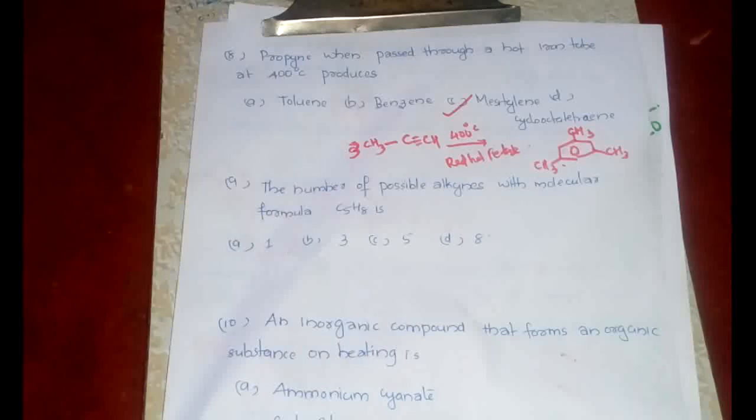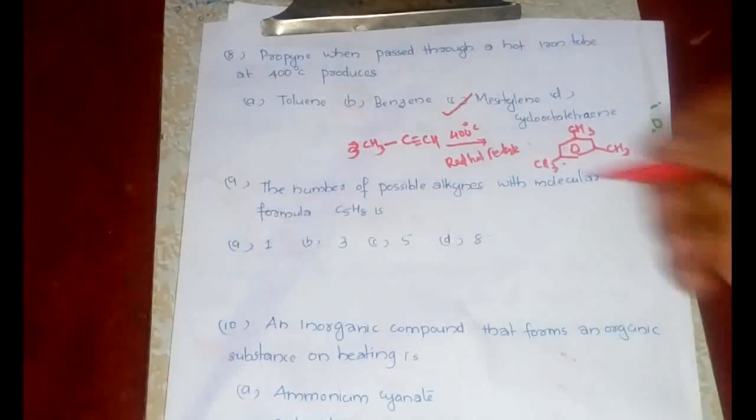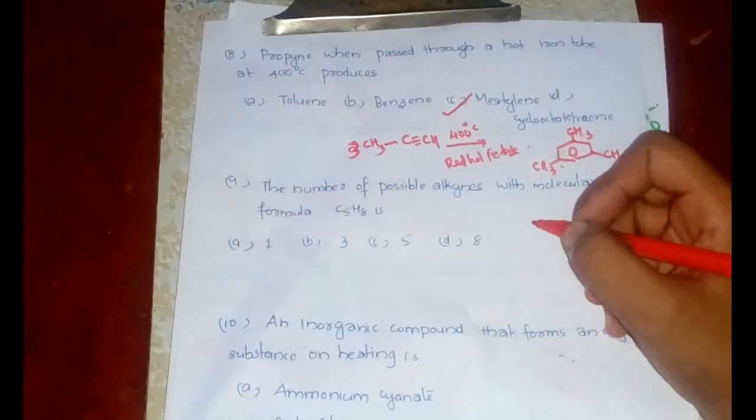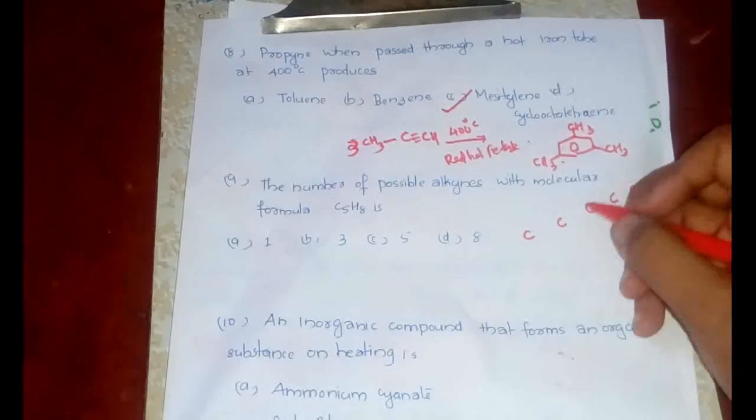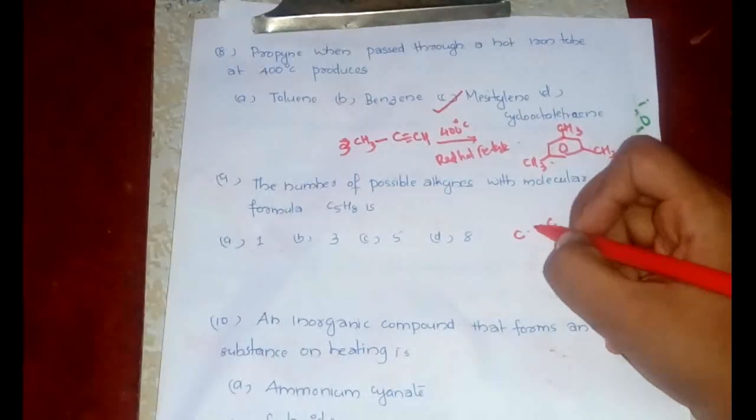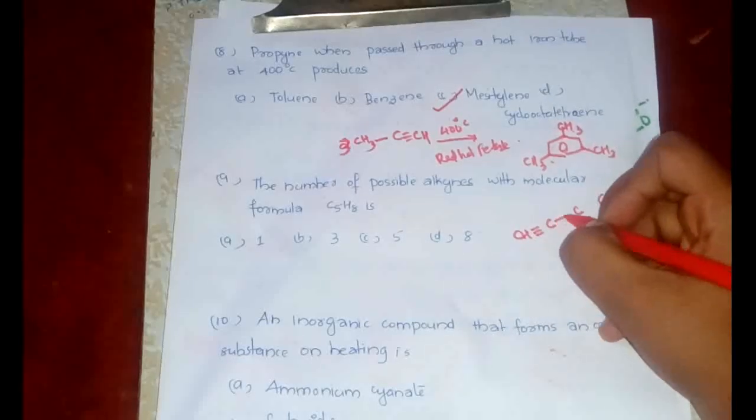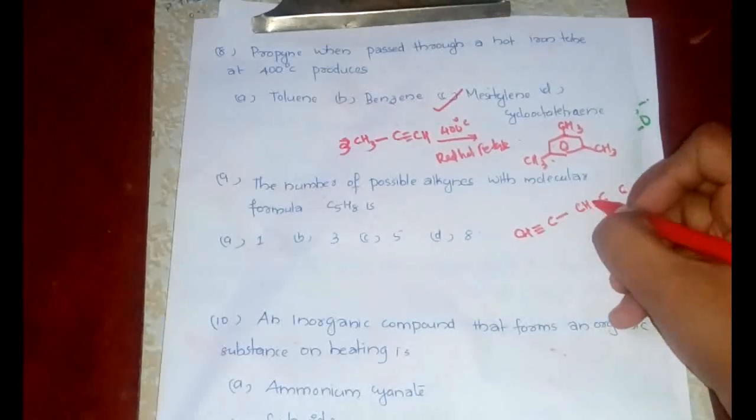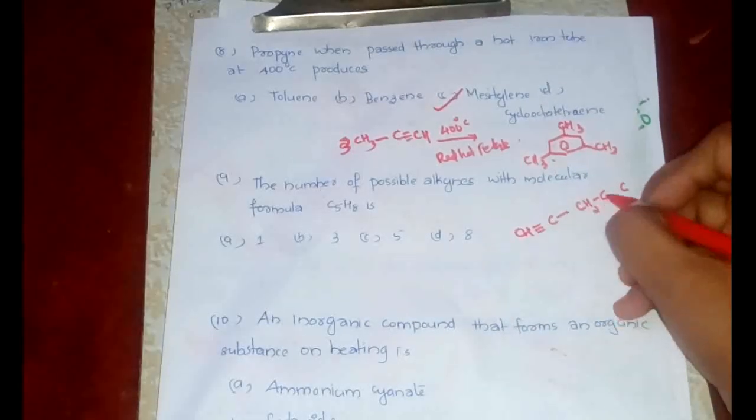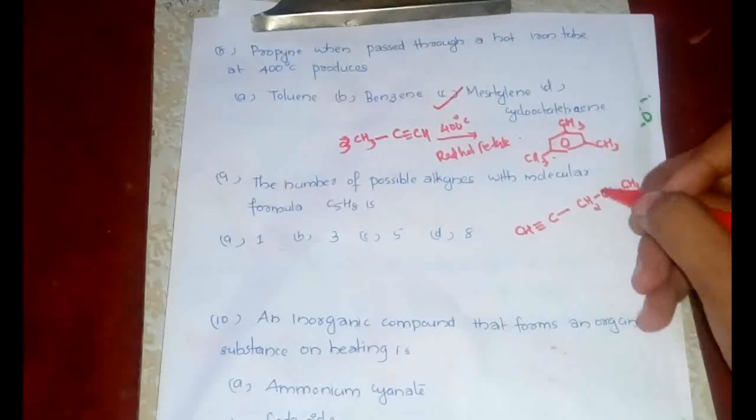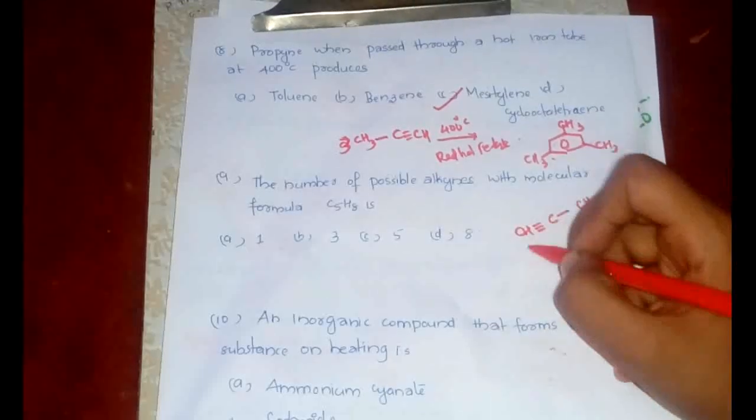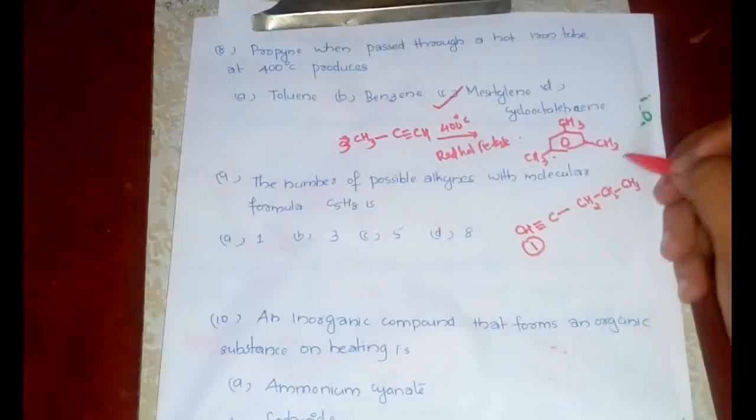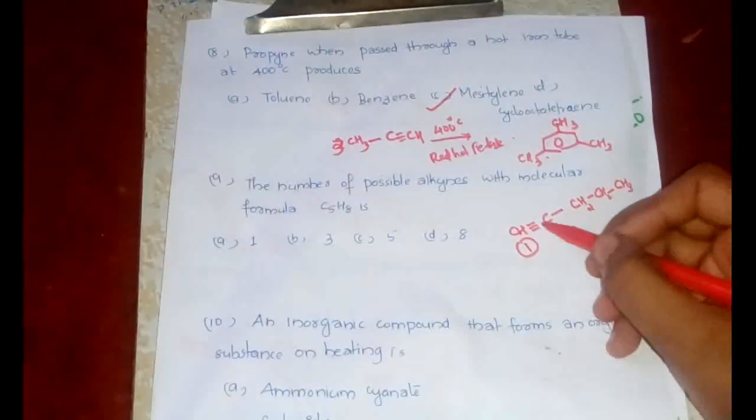Now the ninth question: the number of possible alkynes with molecular formula C5H8. The first one would be normal pentyne because we will have five carbons. Let's see. We are putting triple bond here. We have CH≡C-CH2-CH2-CH3. Let's count the number of hydrogens: 1, 2, 3, 4, 5, 6, 7, 8. So this is one.